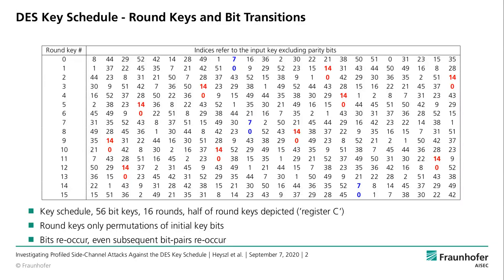The DES key schedule is remarkable because it is very simple. Unlike the AES key schedule, which includes an S-box transformation, the DES key schedule simply shifts and permutes key bits. The 16 round keys are created purely by shifting and permuting bits from the original key. This means that bits reappear in all the round keys.